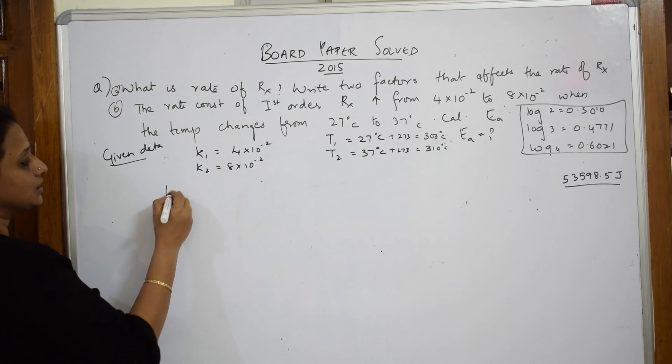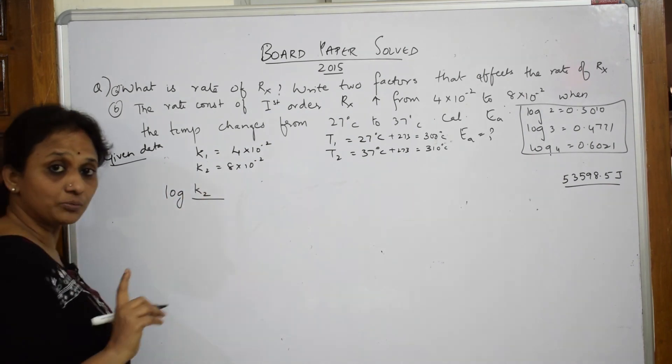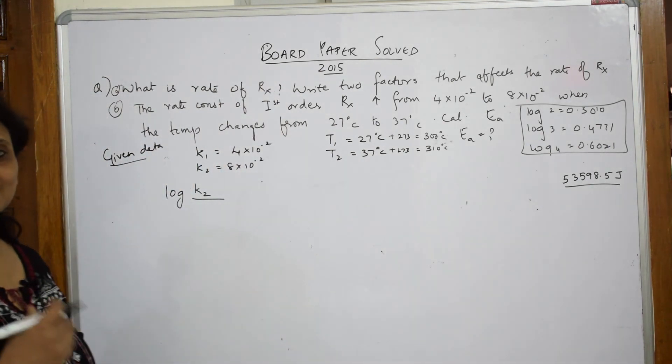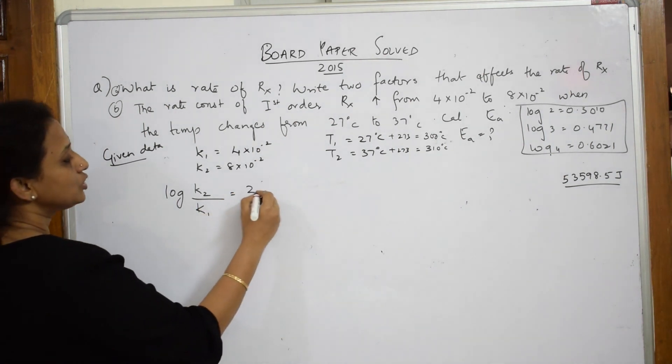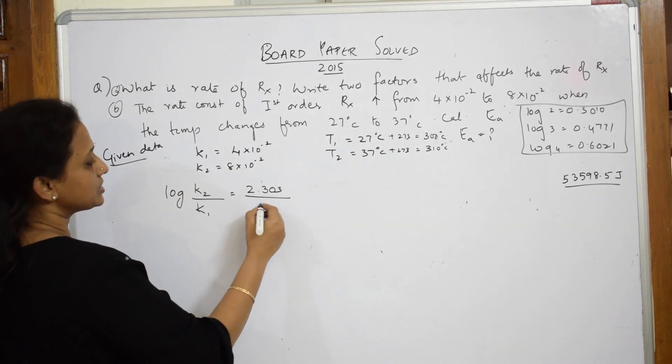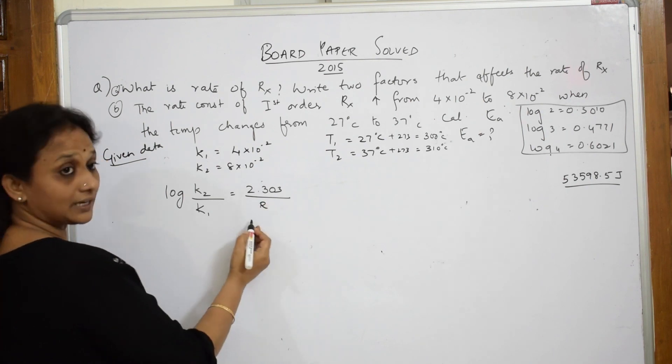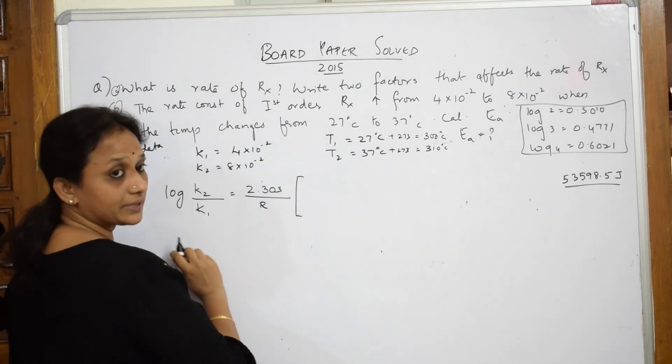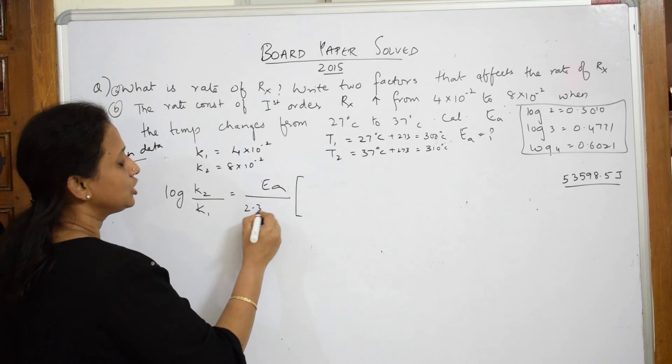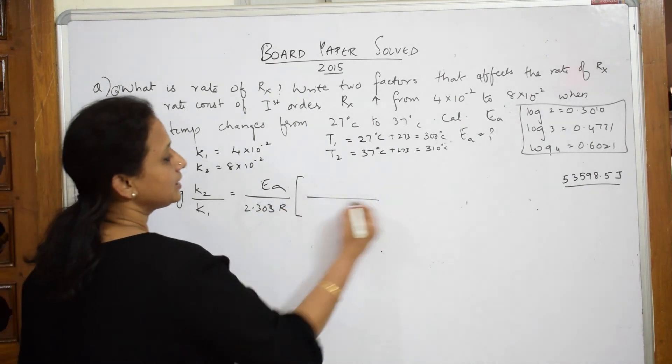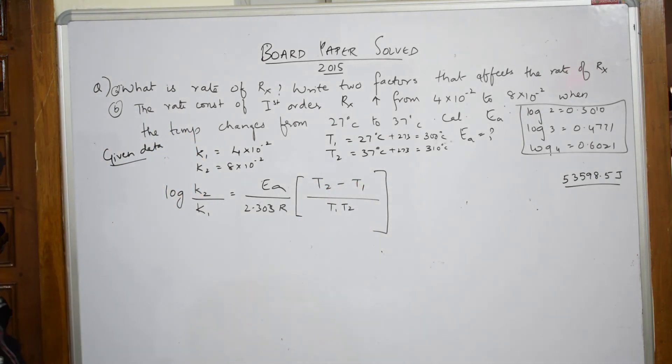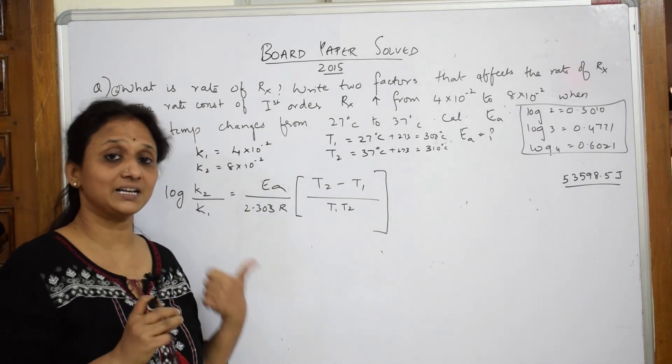What is the formula? We have done log K2 by K1, this is your Arrhenius equation formula. I have done a video on Arrhenius equation formula. Please go through the video. K2 by K1 is equal to EA by 2.303 R. Then we write T2 minus T1 by T1 into T2. This is what I got. I'm sorry, I did a mistake here. This is your R. We have derived this from Arrhenius equation.